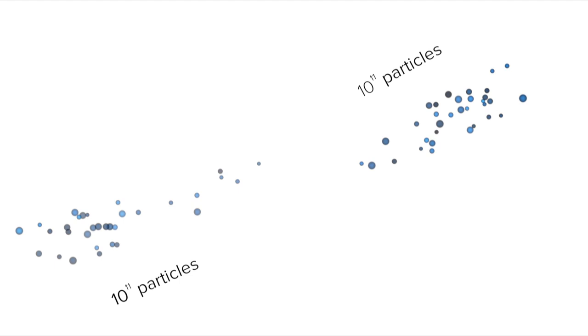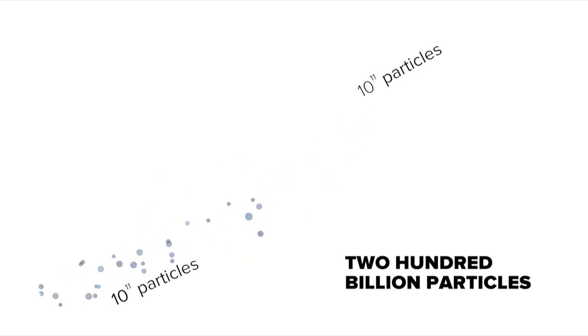In a collider, you shoot a collection of particles through another collection of particles. We call these collections bunches. Now a bunch might have 10 to the 11th particles, which is the scientific way to say 100 billion. Two bunches is 200 billion particles, and some of those particles collide.